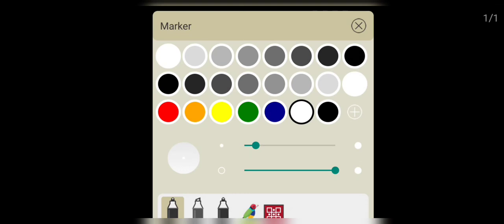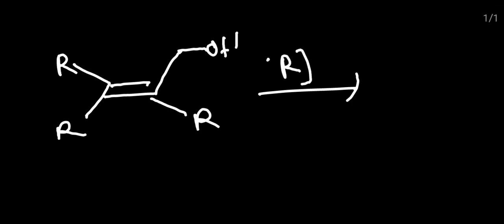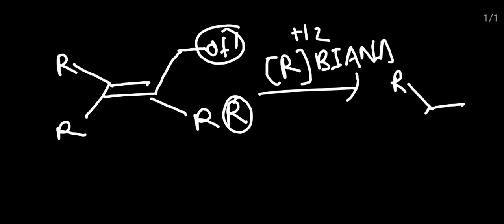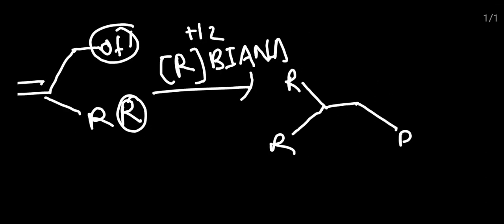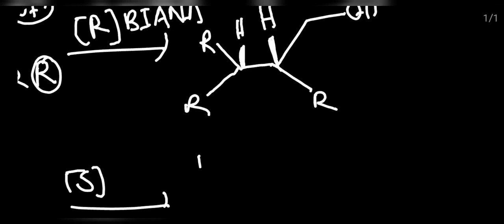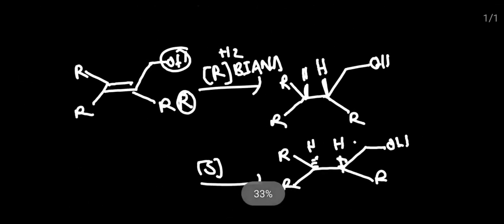Another example is an allylic alcohol. If R-BINAP is given and the allylic alcohol group is on the right-hand side, the hydrogen added across the olefin bond will be above the plane and the rest of the structure remains as is. Similarly, if S-BINAP is given, the hydrogen which attaches over the double bond will be below the plane. This is how the trick can be used to solve questions on Noyori Asymmetric Hydrogenation.